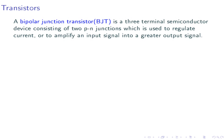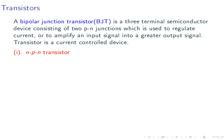Transistors. A bipolar junction transistor is a three-terminal semiconductor device which consists of two PN junctions. It is used to regulate current or to amplify an input signal. It is a current-controlled device. There are mainly two types of transistors: NPN transistor and PNP transistor.